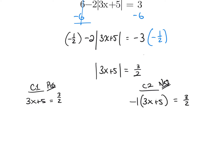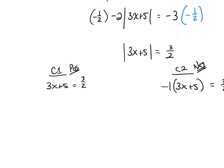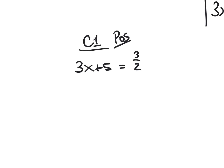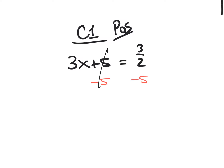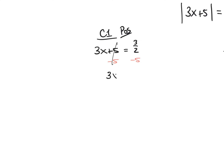To isolate x in Case 1, the first operation to undo is subtract 5. So Case 1 step 1: subtract 5 from both sides. Positive 5 and negative 5 make zero, so I'm left with 3x. What is 3 halves minus 5? If you're struggling with fractions at this level, you need a calculator.